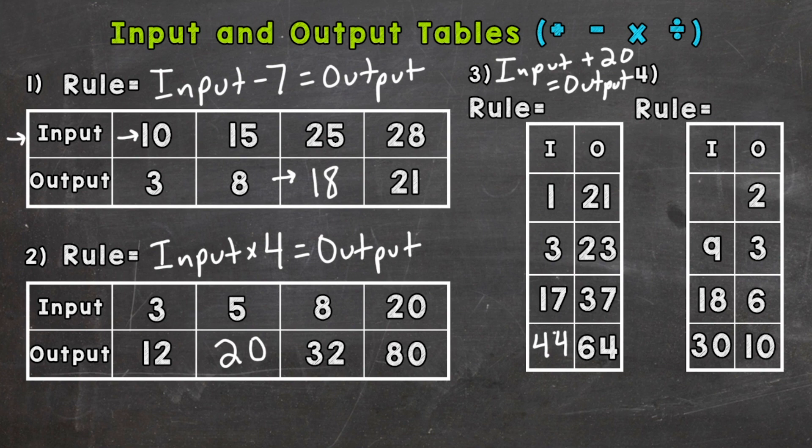So our rule is input divided by 3 equals our output. We need to think: what divided by 3 equals 2? And the answer to that is 6. 6 divided by 3 gives us the output or corresponding term of 2.